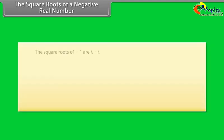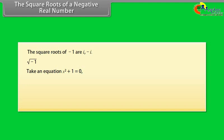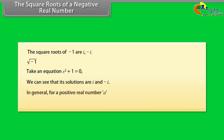The square roots of a negative real number. The square roots of minus 1 are iota and minus iota. Take the equation x squared plus 1 equals 0 — its solutions are iota and minus iota. In general, for a positive real number a, the square root of minus a equals the square root of a times the square root of minus 1, which equals the square root of a times iota.